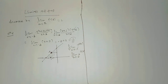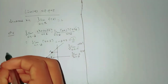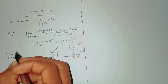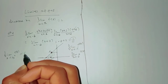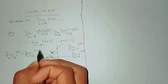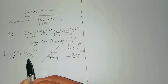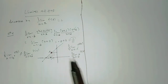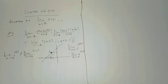The limit does not exist when the limit of x goes to x-naught from the right does not equal the limit of x goes to x-naught from the left. If these two one-sided limits are not equal, then the limit does not exist.